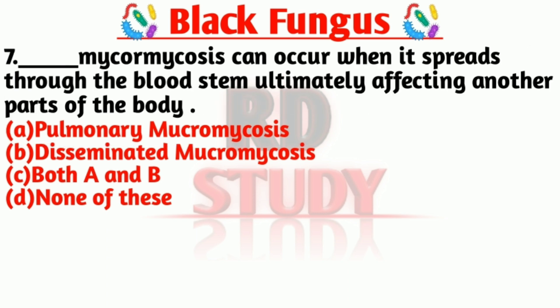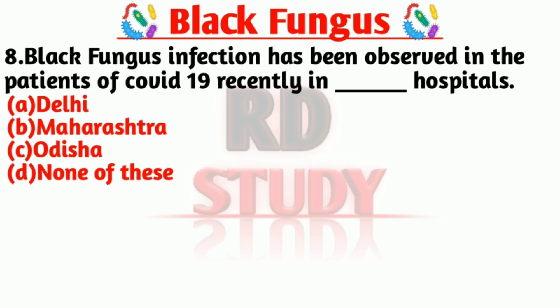Question number seven: dash mucormycosis can occur when it spreads through the bloodstream, ultimately affecting another part of the body. The answer is option B — Disseminated Mucormycosis. Disseminated mucormycosis can occur when it spreads through the bloodstream, ultimately affecting another part of the body.